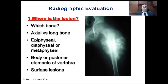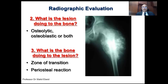The first question — where is the lesion? — means which bone, whether it is an axial or long bone, whether it is in the epiphysis, diaphysis, or metaphysis, and if it's in the vertebra, whether it is in the body or the posterior elements. Is it a medullary lesion or a surface lesion? For example, in this X-ray, the lesion would be in the metaphysio-diaphyseal area of a femur of a skeletally immature patient. The second question — what is the lesion doing to the bone? — asks whether it is osteoblastic, osteolytic, or both. In this X-ray, we say it's an osteoblastic lesion.